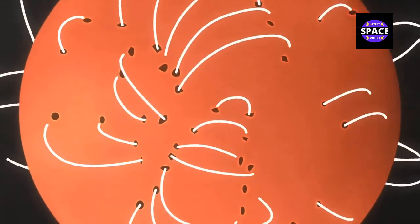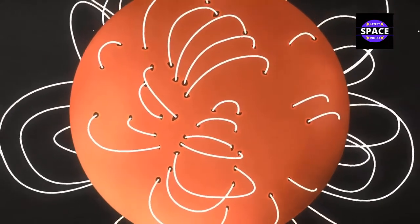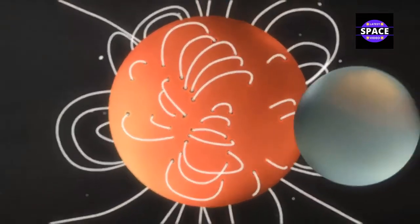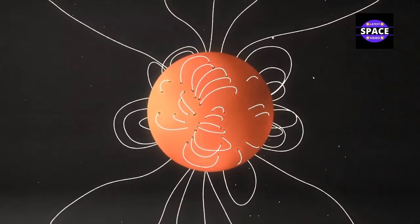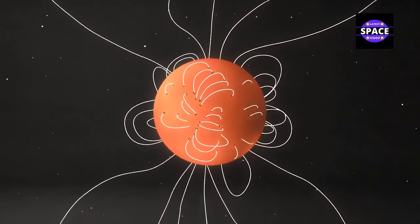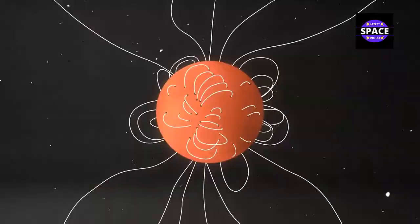These sunspot patterns give clues to what drives the solar cycle, the twisting of the Sun's magnetic field. Like Earth, the Sun has a magnetic field with a north and south pole. But unlike Earth, the Sun's magnetic field becomes extremely complex. This is because the Sun is made of plasma, a charged gas that generates electric currents.